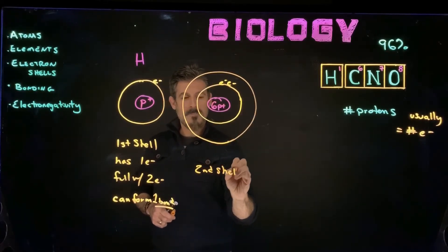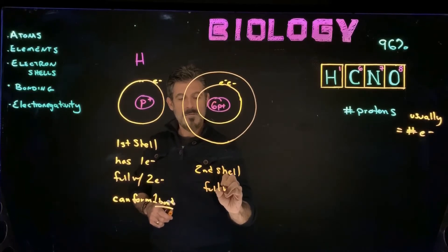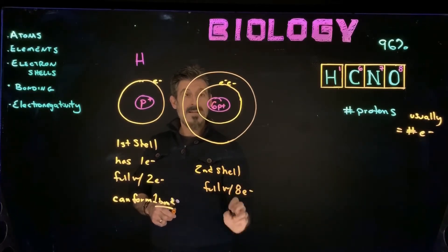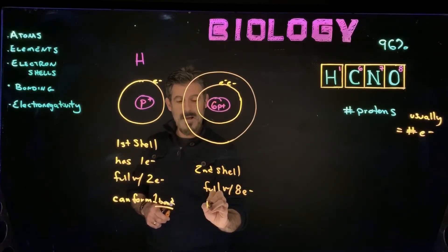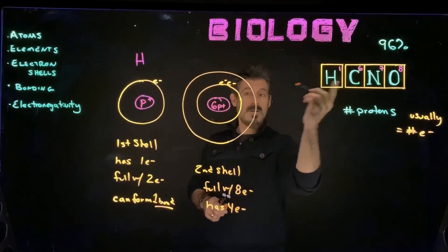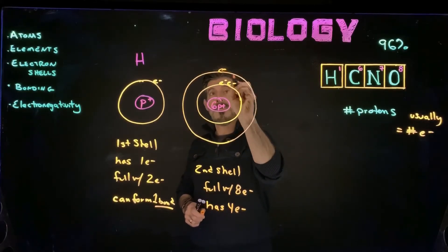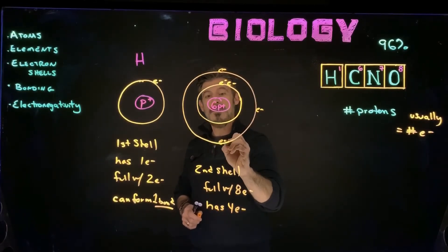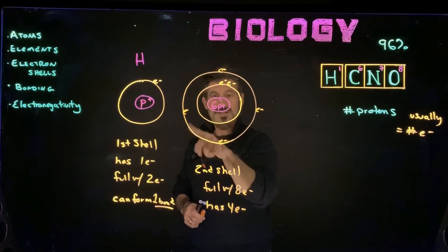So a second shell is full with eight electrons, but carbon here is going to have four electrons, right? Because it has six total. There's two, three, four, five, six. That would be six electrons.